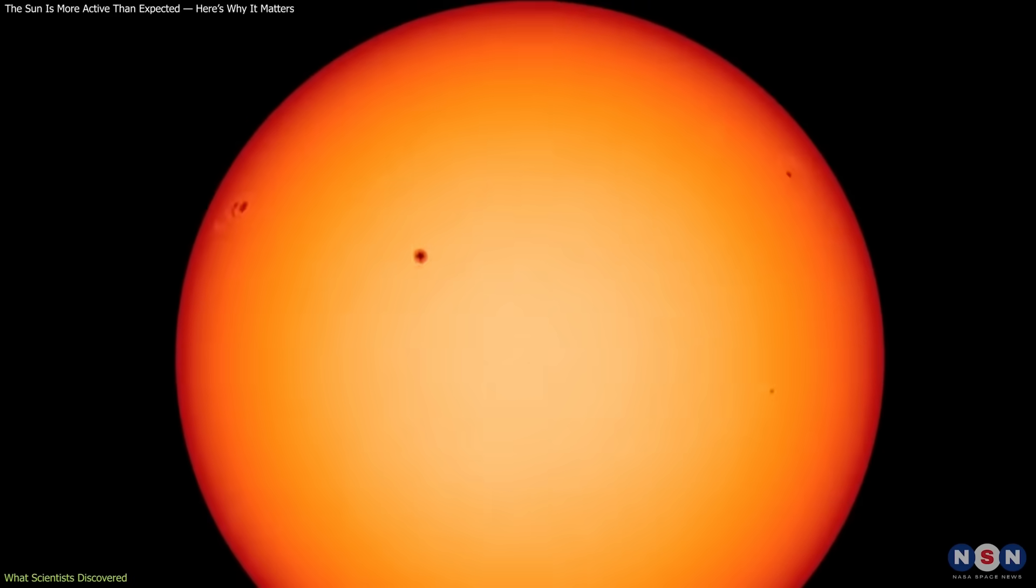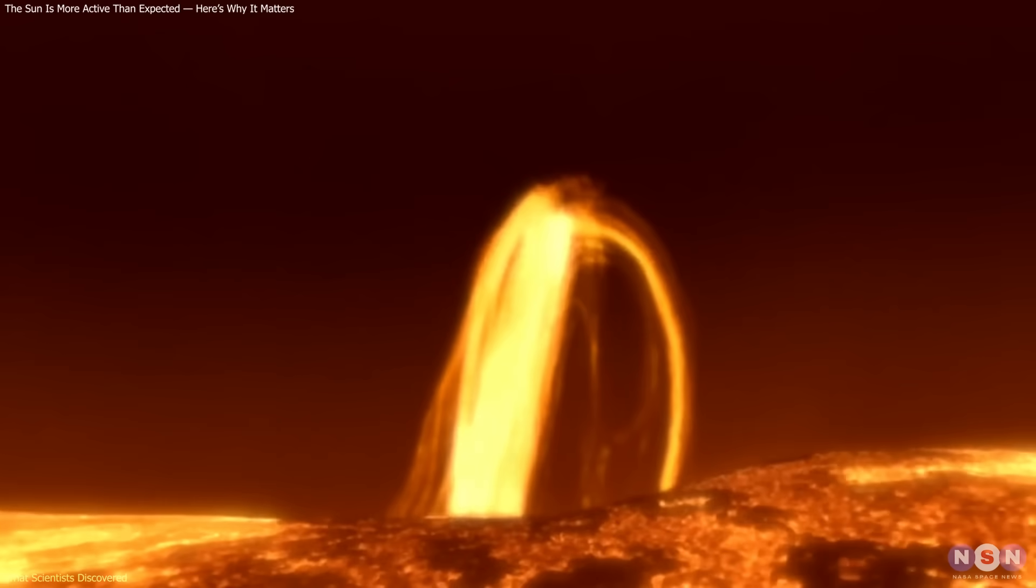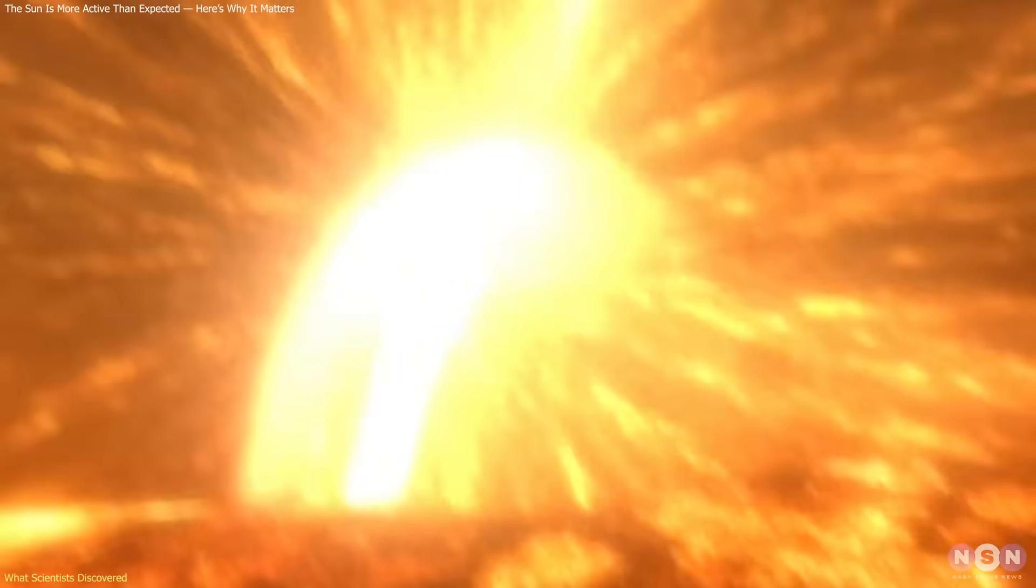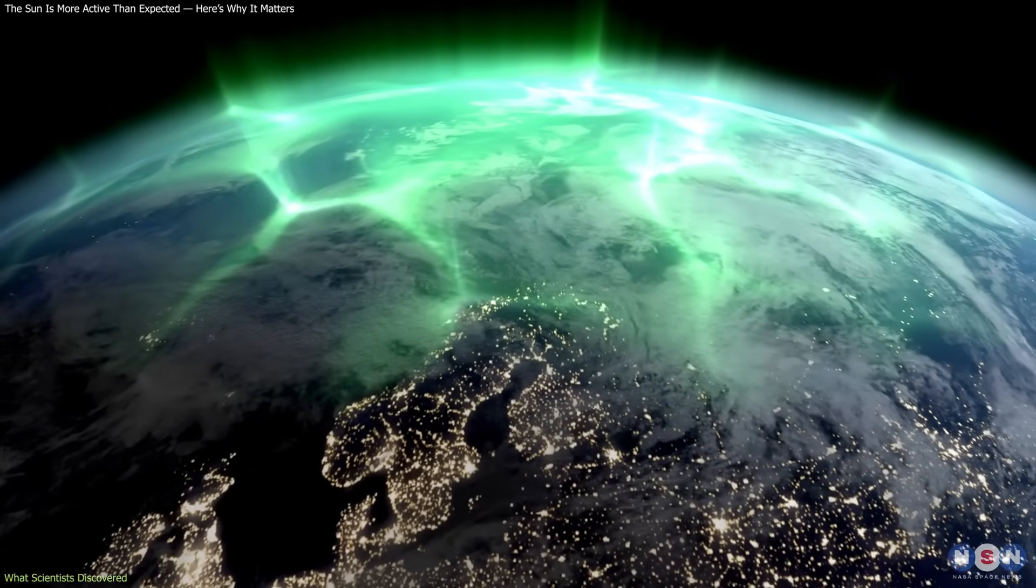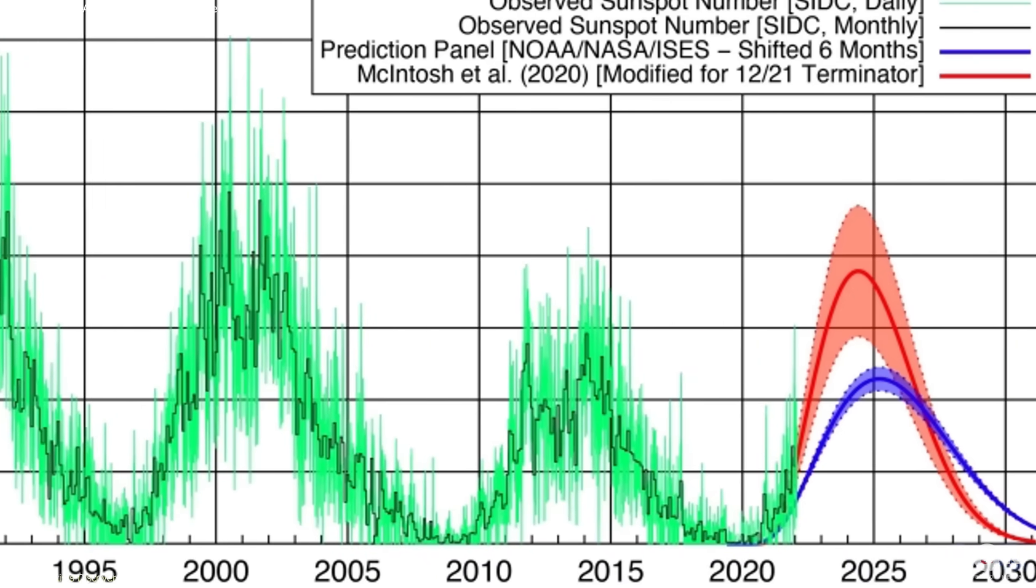By 2023, sunspot counts were already well above forecasts. In 2024, it produced a series of storms strong enough to disrupt communications and paint vivid auroras across much of the globe. These events signaled that it was not following the expected script.